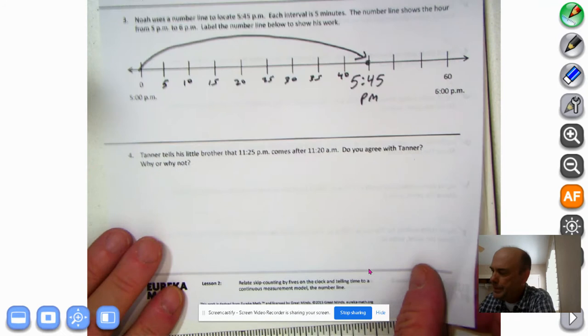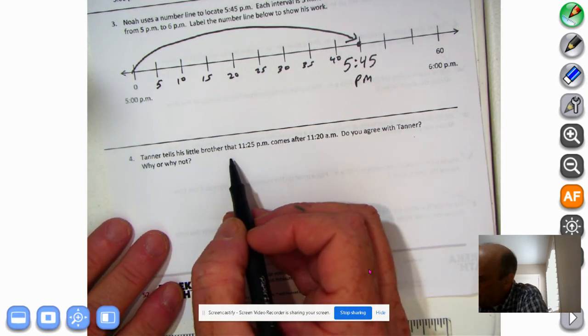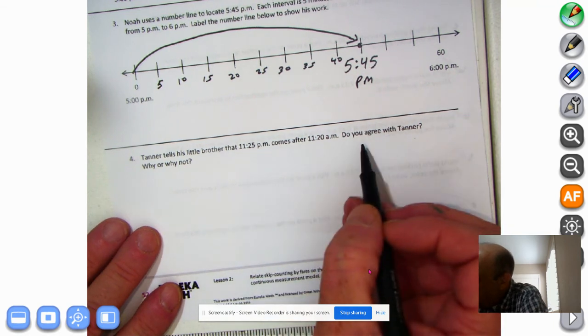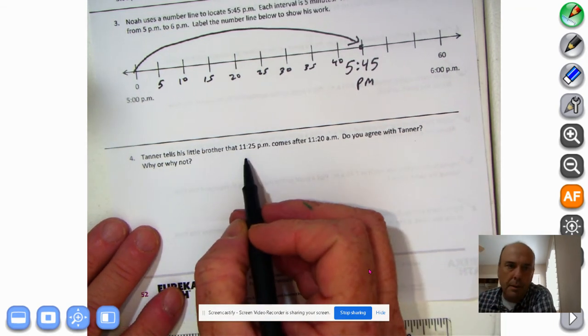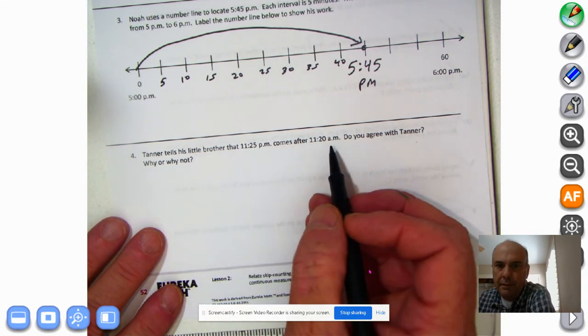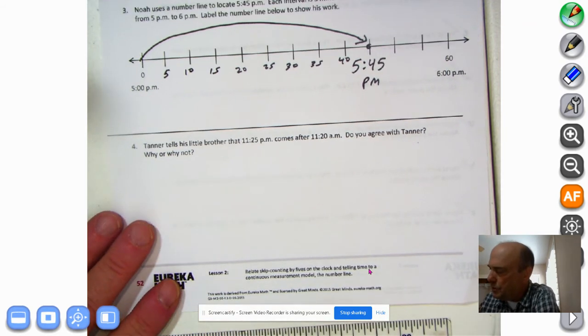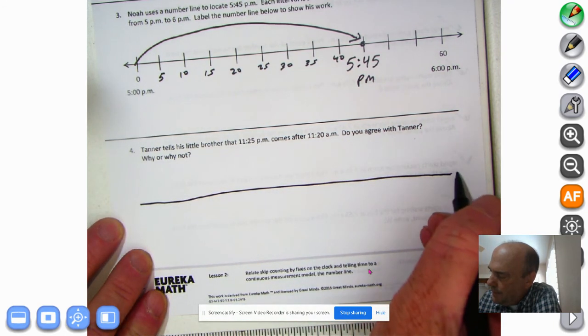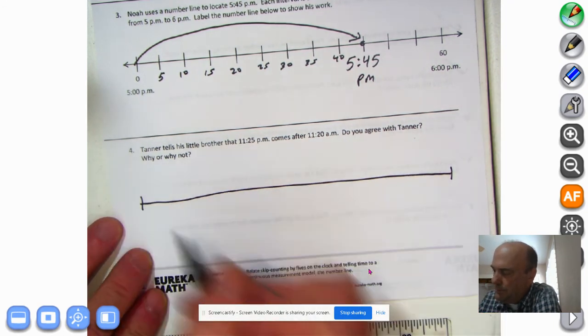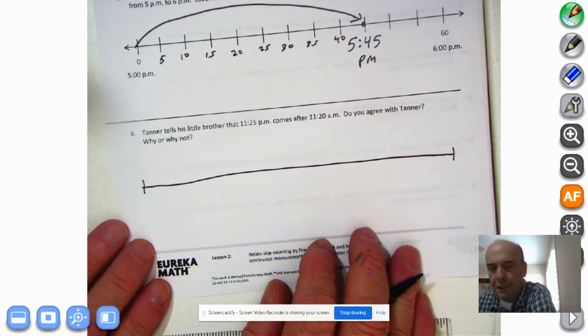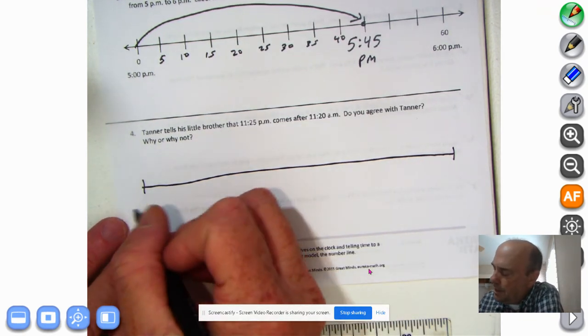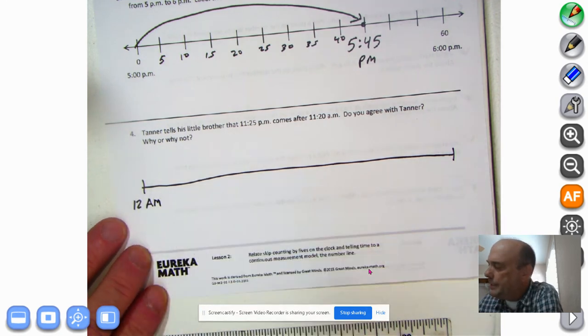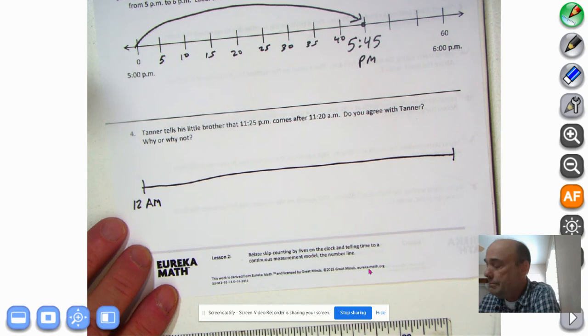Let's look at number four. Tanner tells his little brother that 11:25 PM comes after 11:20 AM. Do you agree with Tanner? Why or why not? That's a tricky question. 11:25 PM, 11:20 AM. We really haven't covered this too much. We can make a number line to kind of represent the continuous nature of time. And we'll call this 12 AM. 12 AM is midnight, okay? Midnight. Most of us are in bed by then.